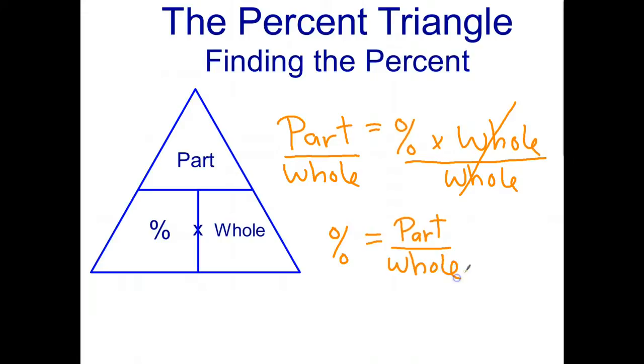Now let's have a look at the percent triangle. I'm trying to find the percent. There's the part, there's the divided by, and there's the whole. So you can look at the percent triangle and there's your formula: percent equals part divided by whole.